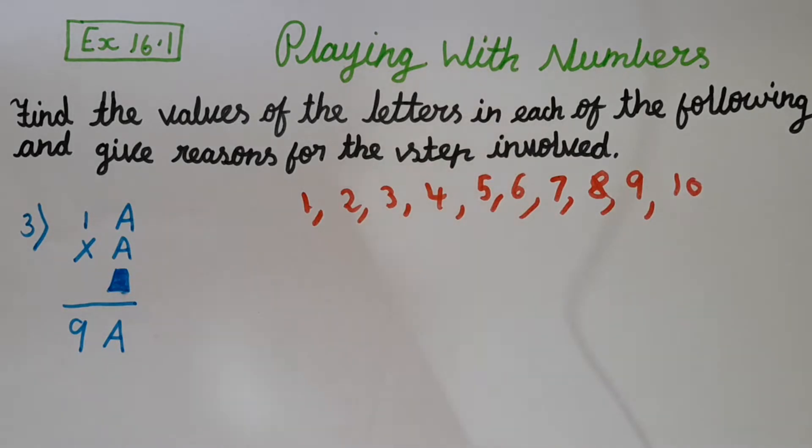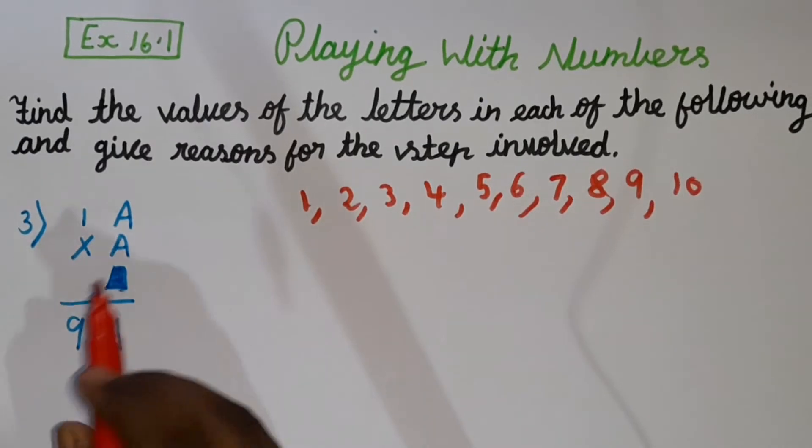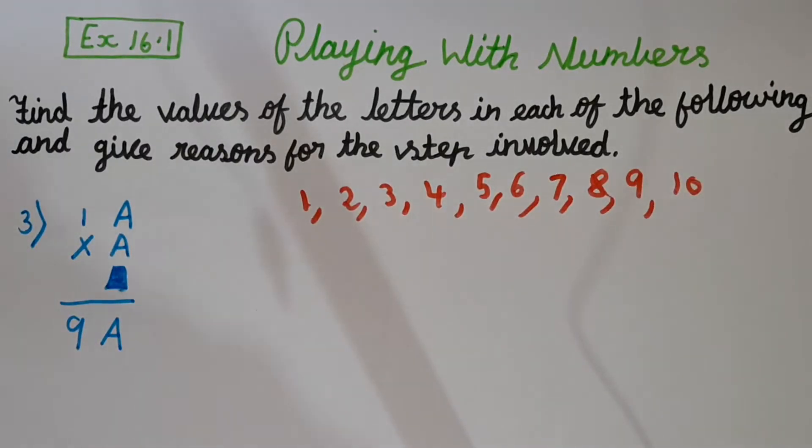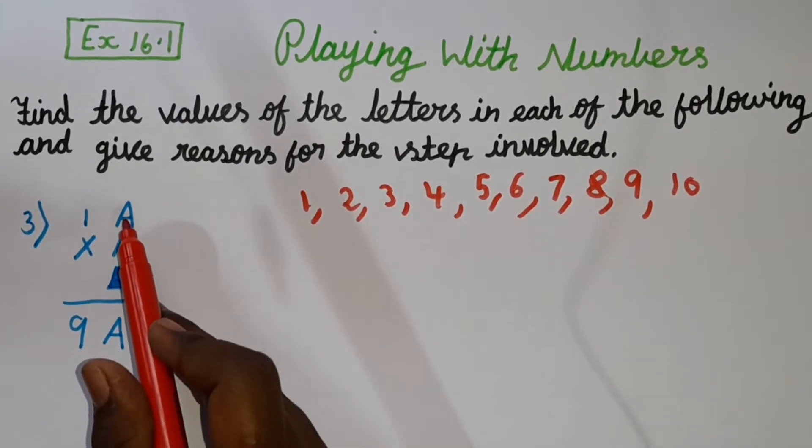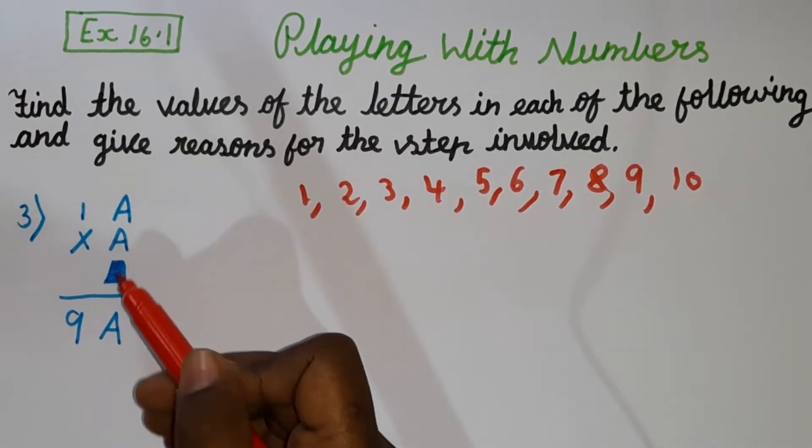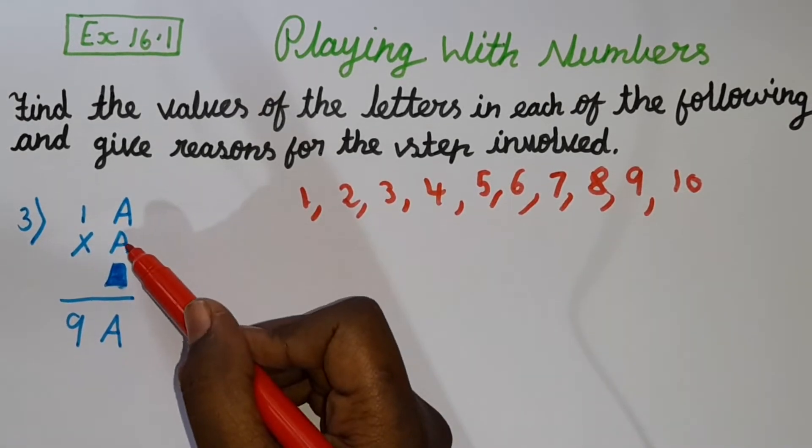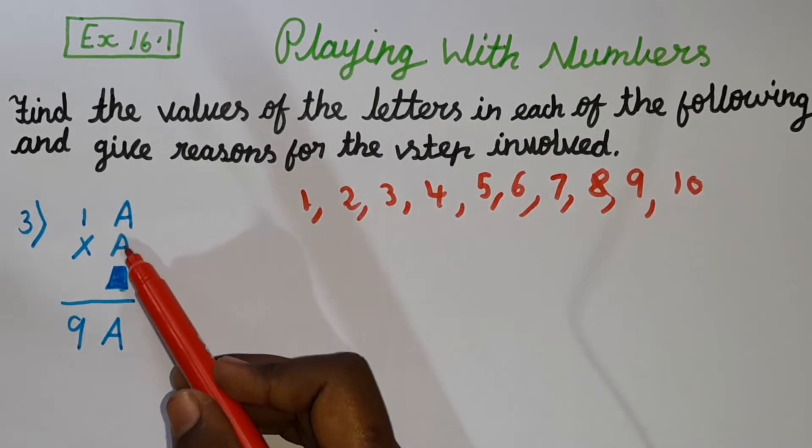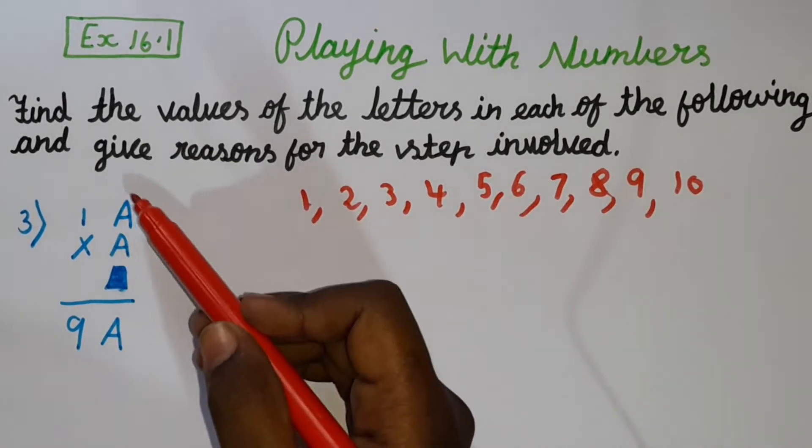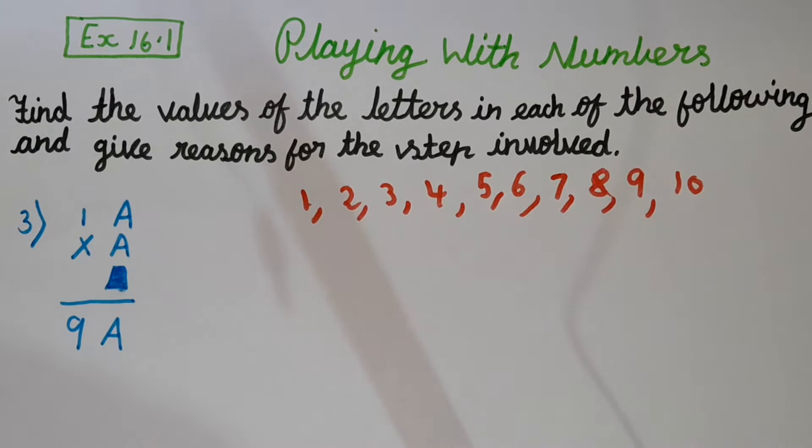So let's multiply. One more thing I want to say. Here for A, if we take 1, here also it should be 1 and here also it should be 1 because it's written A, A, A. For example, if A is written here and B is written there, we should take A as some number, B as some number. But here three are similar, so the three numbers should end with the same number.